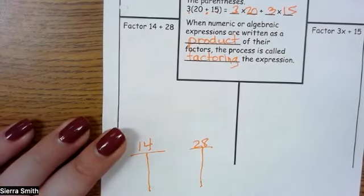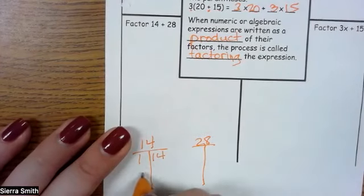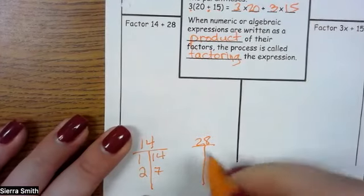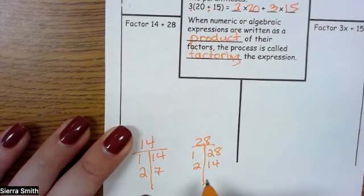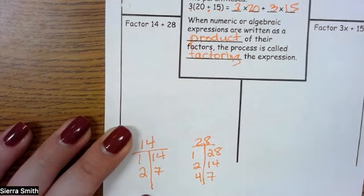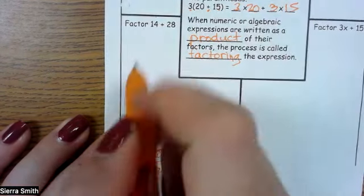So we set up our factor trees. Factors of 14 are 1 and 14, 2 and 7. Factors of 28: 1 and 28, 2 and 14, 4 and 7, which gives us the greatest common factor of 14. So I can pull that out of my problem.